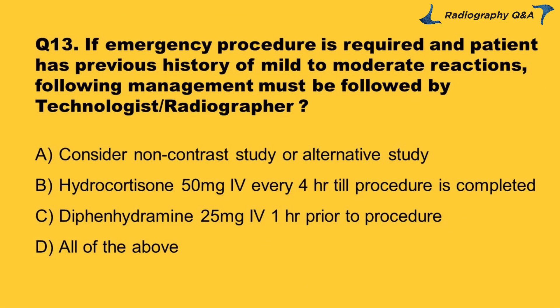Question 13: If an emergency procedure is required and the patient has a previous history of mild to moderate reactions, the following management must be followed: Option A: consider non-contrast study or alternative study. Option B: hydrocortisone 50 mg IV every 4 hours until procedure is completed. Option C: diphenhydramine 25 mg IV one hour prior to procedure. Option D: all of the above. Right answer is Option D.